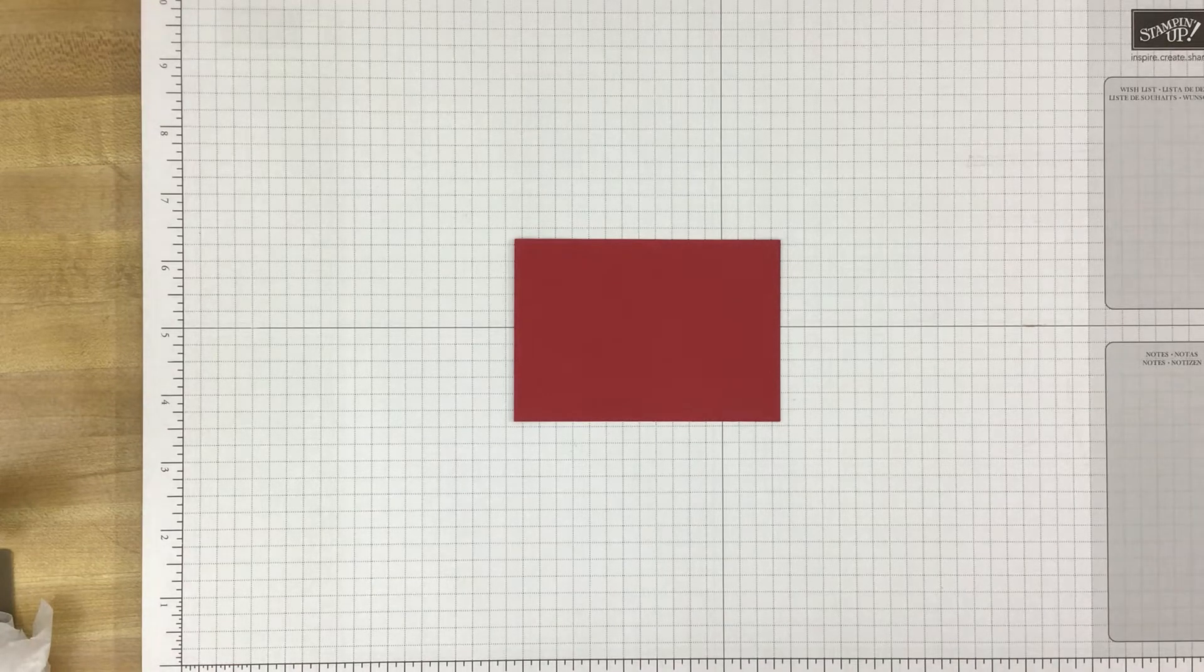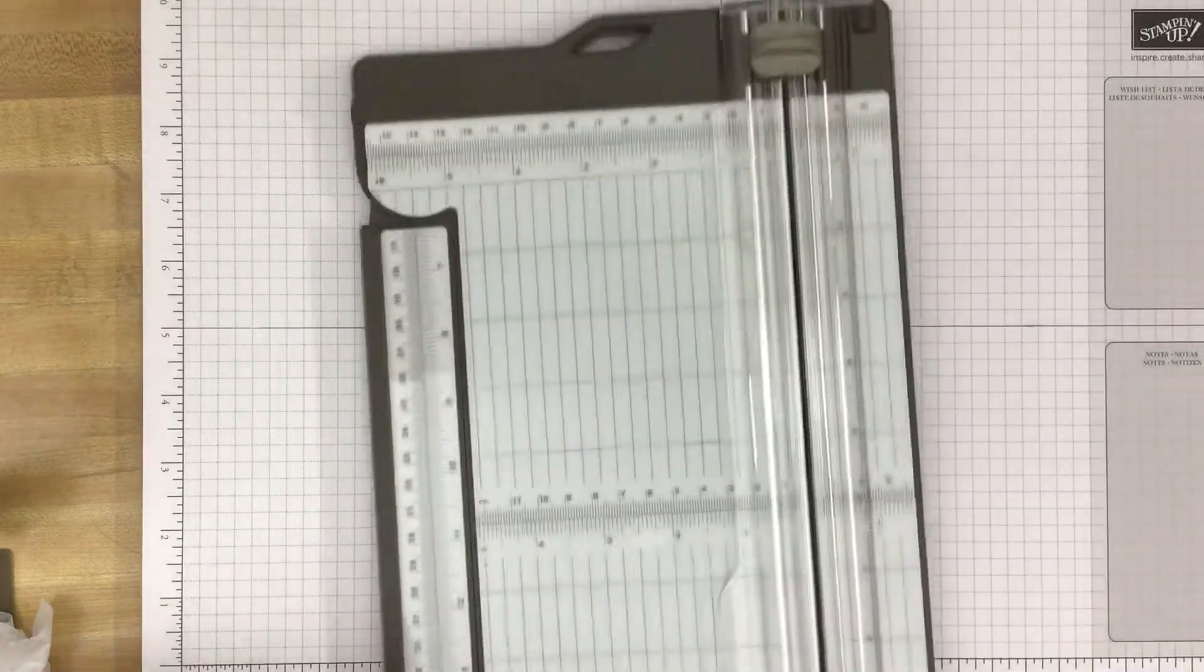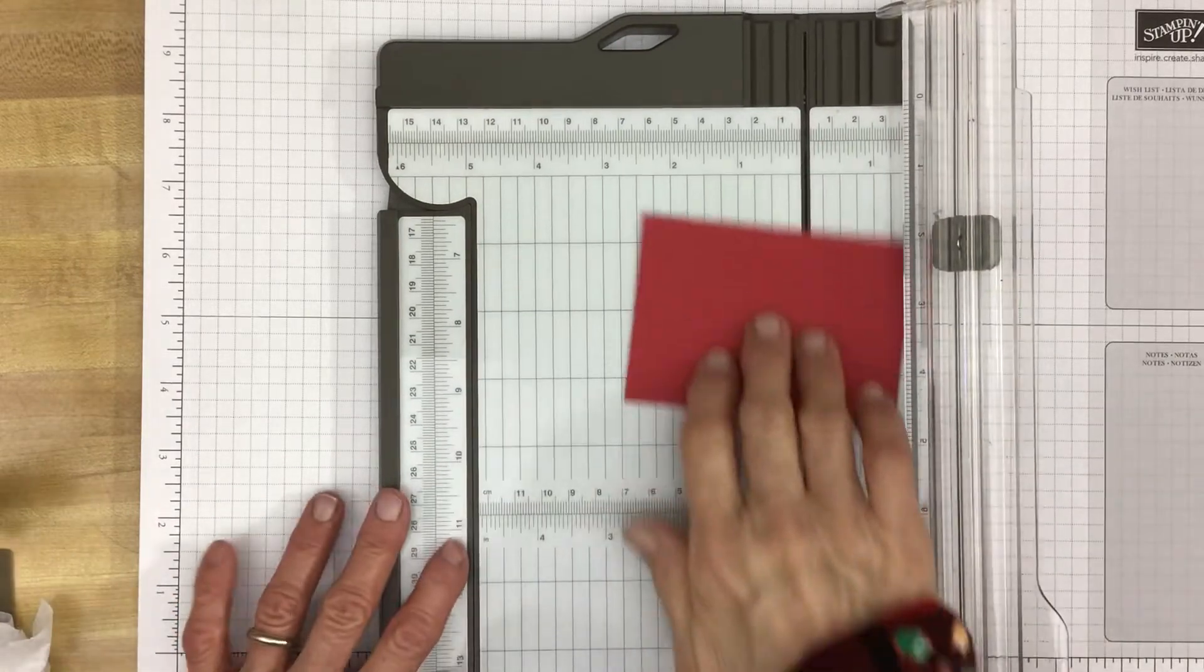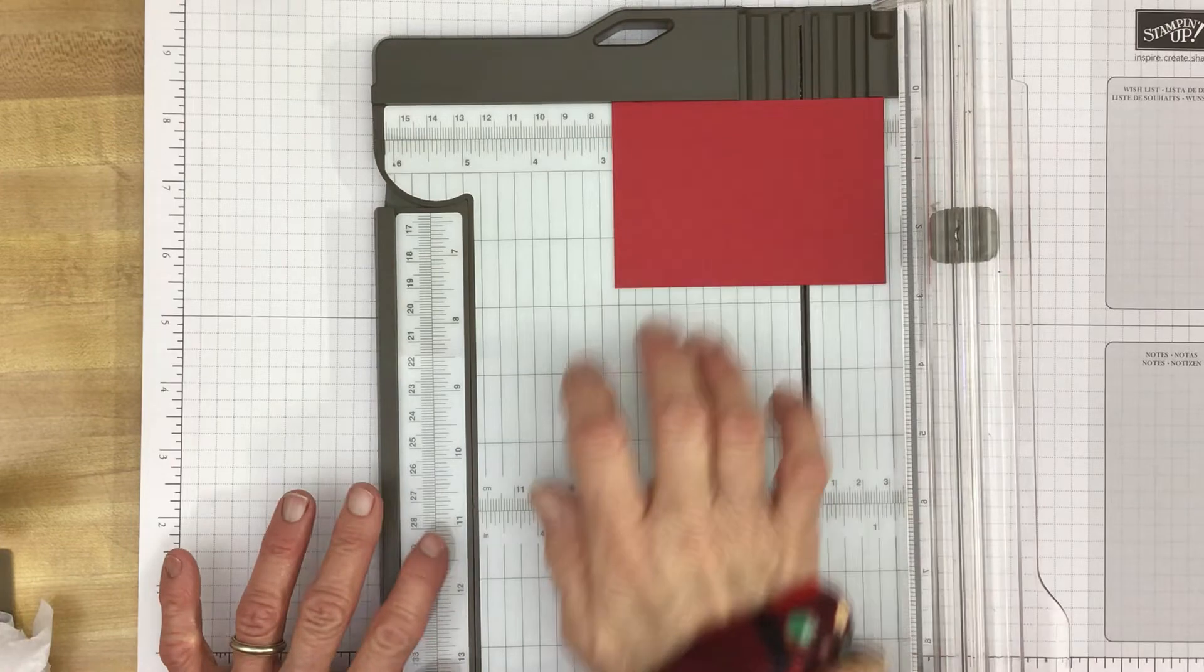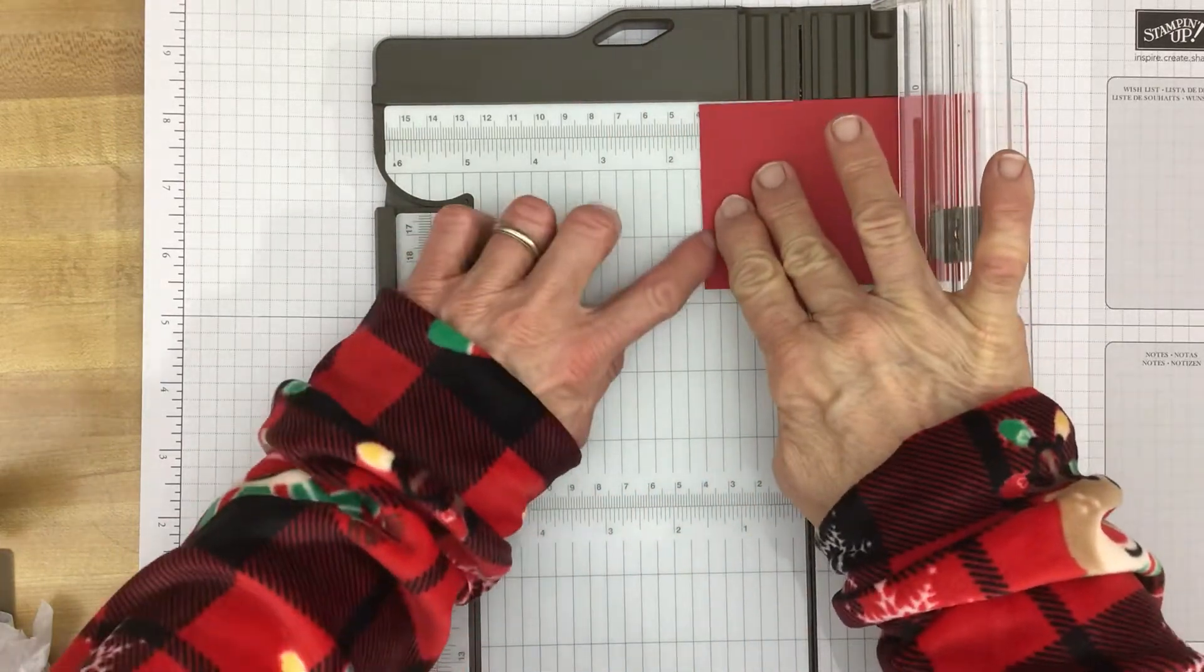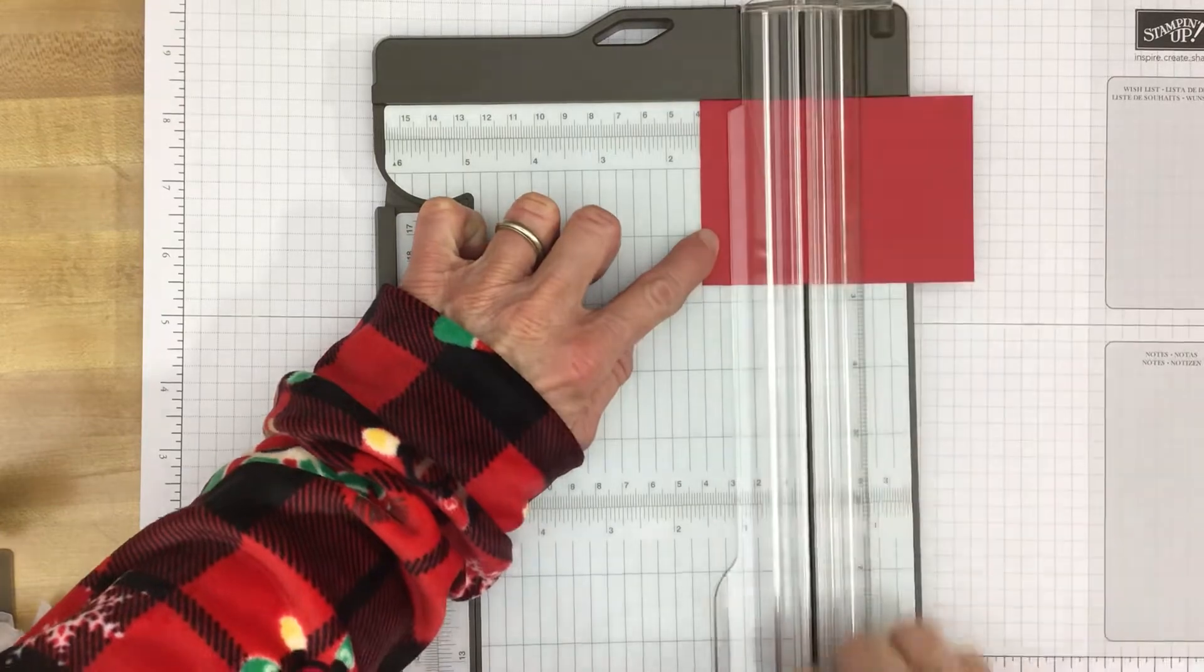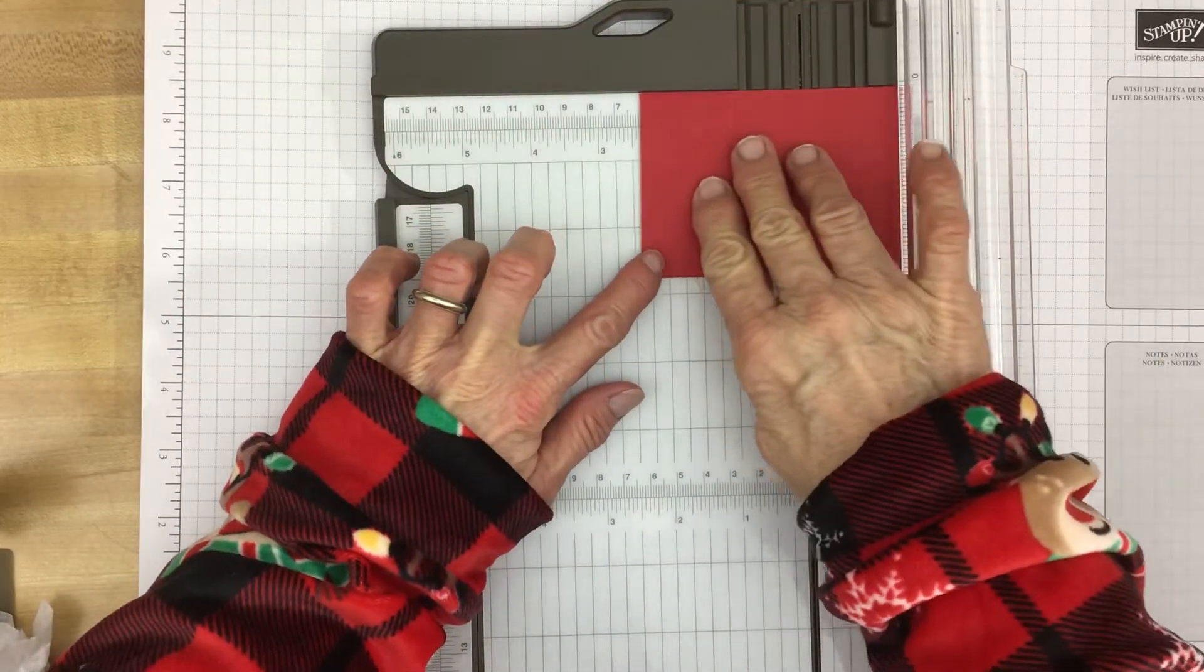And then we're going to do a little scoring. Of course you can use a scoreboard but I'm just going to bring in my paper trimmer and I have the score blade here at the top, the gray blade. And with the four inch side at the top we are going to score at one and one half. So there's one and a half.